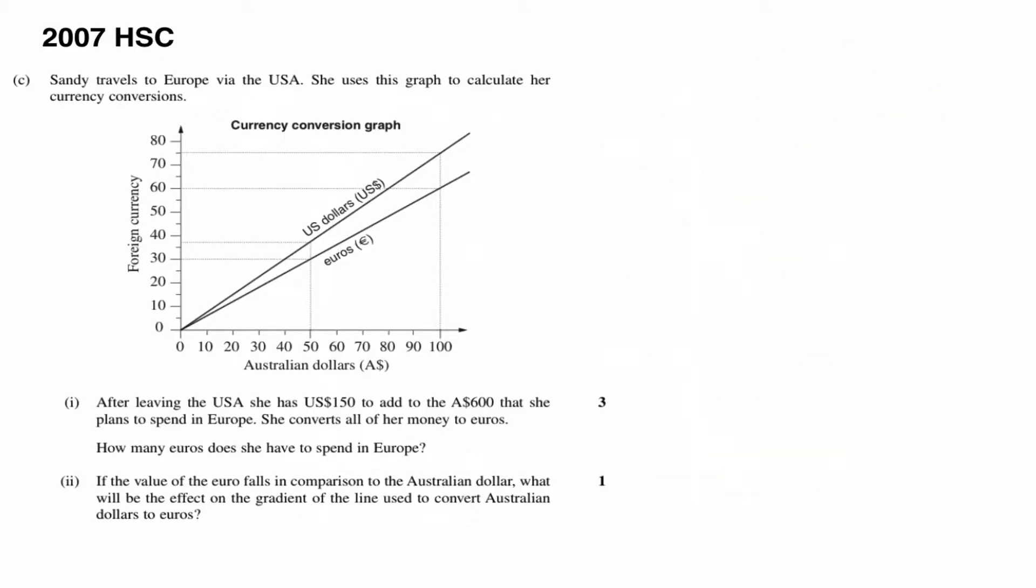Here's another typical using a linear function as a mathematical model question from the 2007 HSC, using a currency conversion graph. So Sandy travels to Europe via the USA, she uses this graph to calculate her currency conversions. And a key point to notice is that there are specific points marked on that graph for you. So you need to use those points, as indicated by those dotted lines, in your calculations.